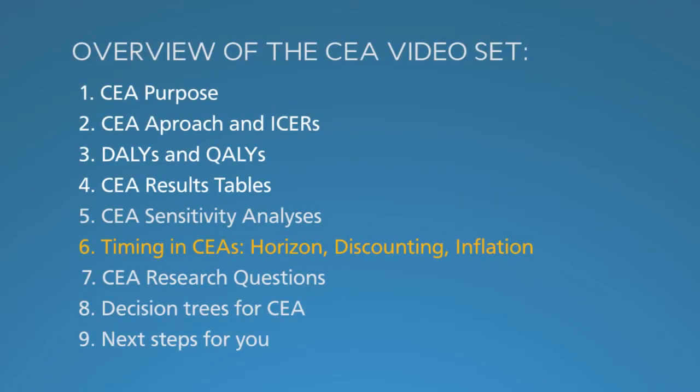In the beginning of this series, you learned why to do cost-effectiveness analysis and how to compare net costs to health outcomes. Then you learned about DALYs and QALYs and how to present cost-effectiveness analysis results. In segment five, you learned about using sensitivity analysis to quantify uncertainty.